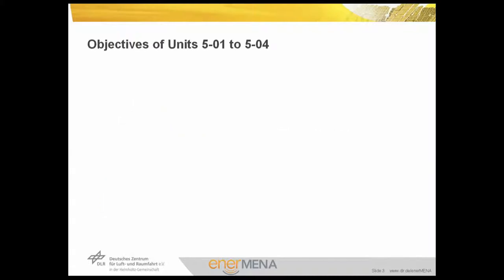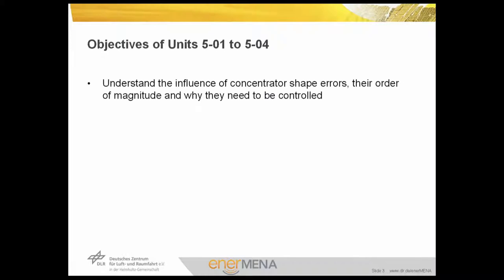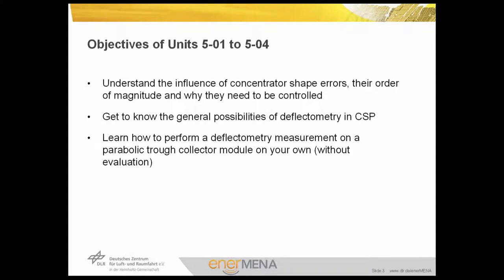Let's have an overview of the objectives of Units 5.1 to 5.4. We want to learn to understand the influence of concentrator shape errors, their order of magnitude, and why they need to be controlled, measured, and improved. We want to get to know the general possibilities where deflectometry can be used in concentrating solar power applications. We will also learn how to perform a deflectometric measurement on a parabolic trough collector module, and learn how to read and interpret the results.